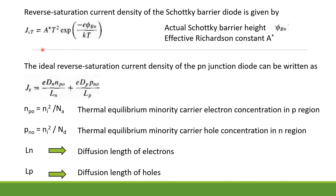The reverse saturation current density of a Schottky barrier diode is given by JST equal to A* T² exponential(−eφBn / kT), where A* is the effective Richardson constant and φBn is the actual Schottky barrier height.